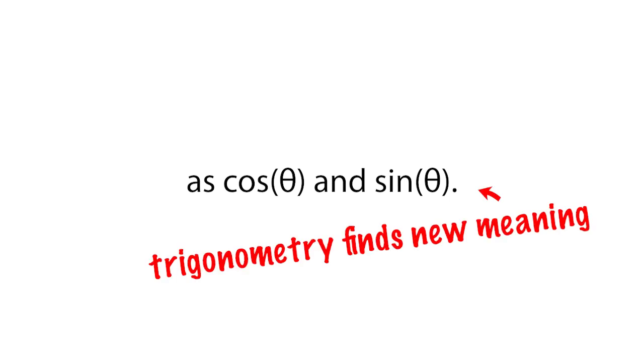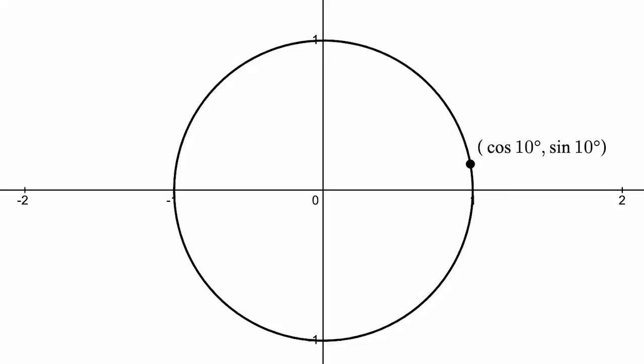So technically, we can redefine our coordinates x and y as cos theta and sin theta. This is where trigonometry finds a new meaning. So as theta goes past 90, we finally have a visual understanding of what our trig functions holistically represent all the way to 360 degrees, and even beyond.